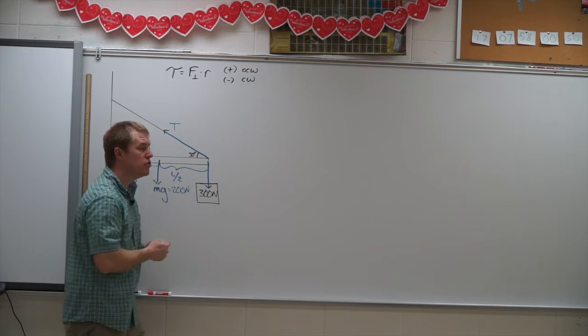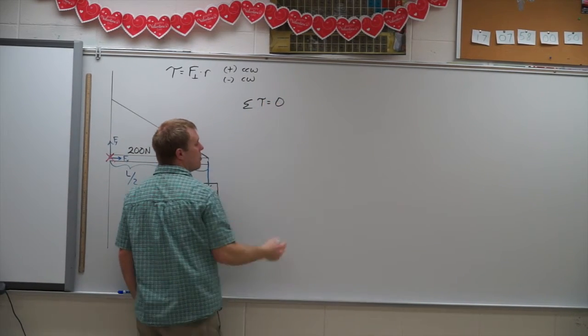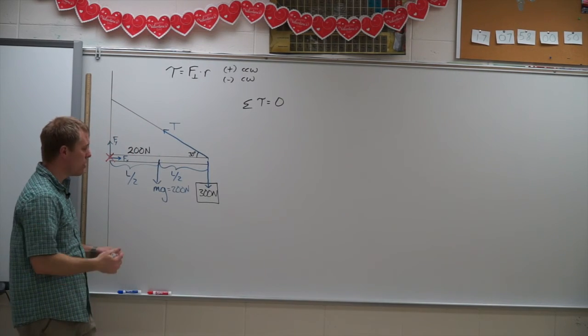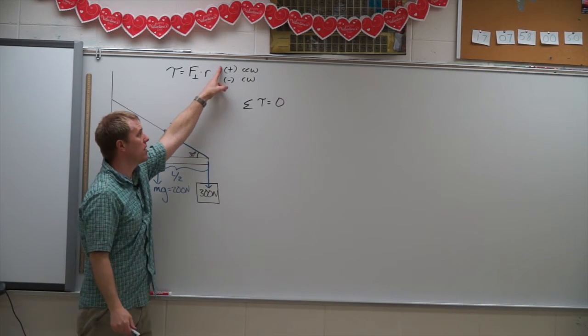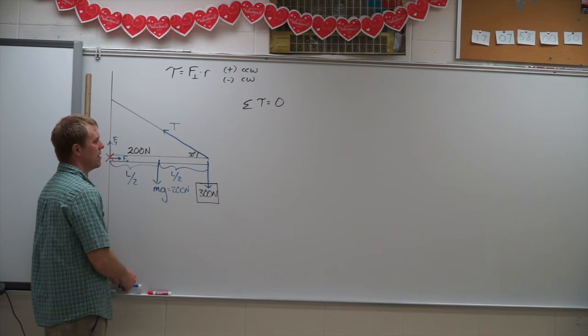Alright, the next step is I'm going to generate my equation. So the sum of the torques equals zero. So I have to add up each torque. Well, torques have direction: counterclockwise and clockwise. So I will need a positive or a negative sign on them as well.